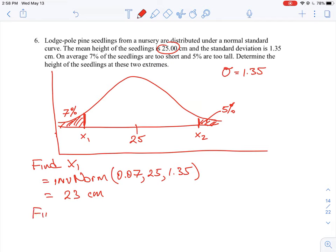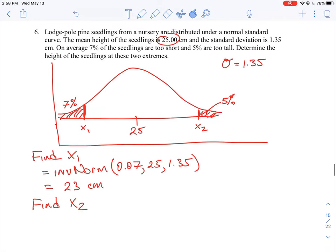7% of the trees are below 23 centimeters. So the next thing we have to do here is find x2. Now, the only thing you really have to watch here is that how do you calculate that 5% area. So this is the thing that we have to watch when you are looking at this problem here.